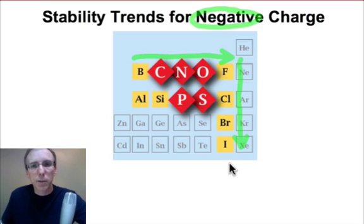The larger size is able to spread that extra electron over a larger region of space, and that contributes to increasing stability with increasing size.